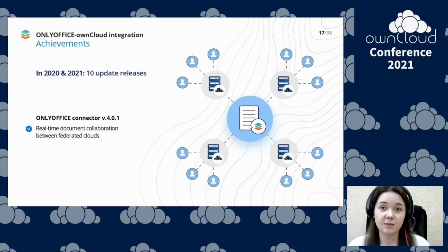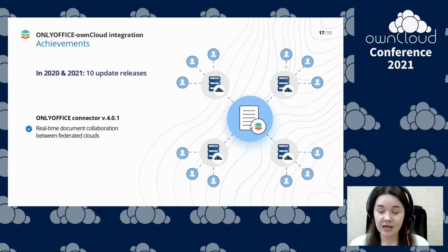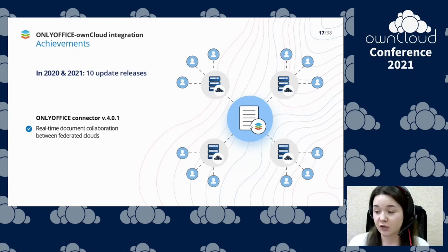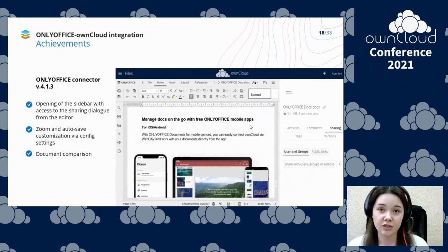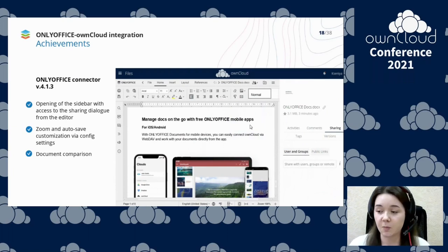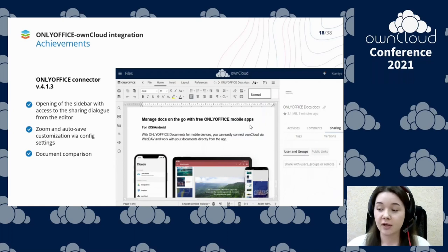First of all, it's co-editing between federated clouds. If your enterprise environment is built with several federated OnCloud instances, you can easily collaborate on documents in real time between them — this feature is especially demanded by research centers. Another useful option is opening the sidebar right from the editor, which allows easily tracking activities and sharing documents with other users. We also added zoom and autosave customization via the config settings, as well as document comparison.